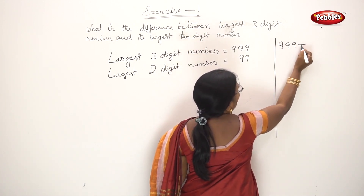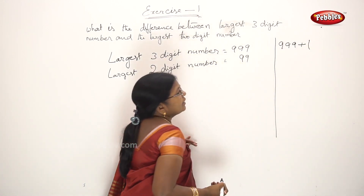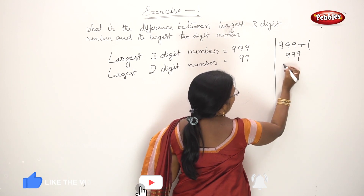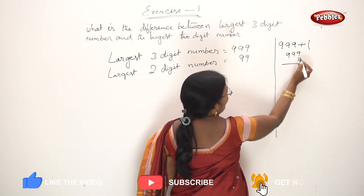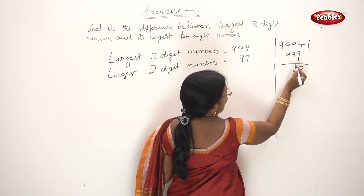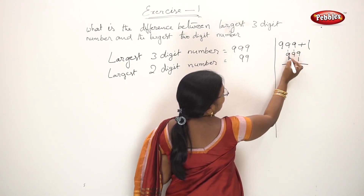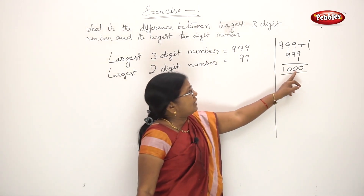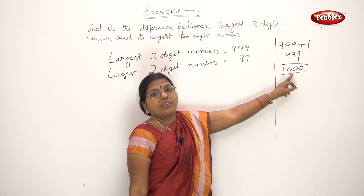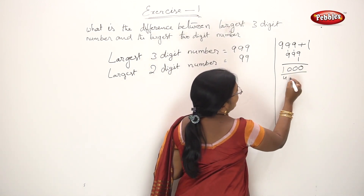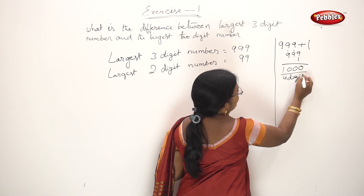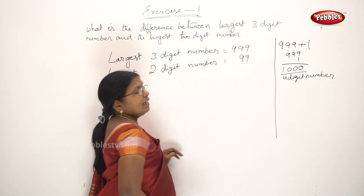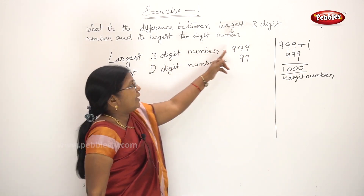999 plus 1: 1 plus 9 = 10, carry over, 1 plus 9 = 10, carry over, 1 plus 9 = 10. That gives 1000, which is a 4-digit number. So 999 is the largest 3-digit number.